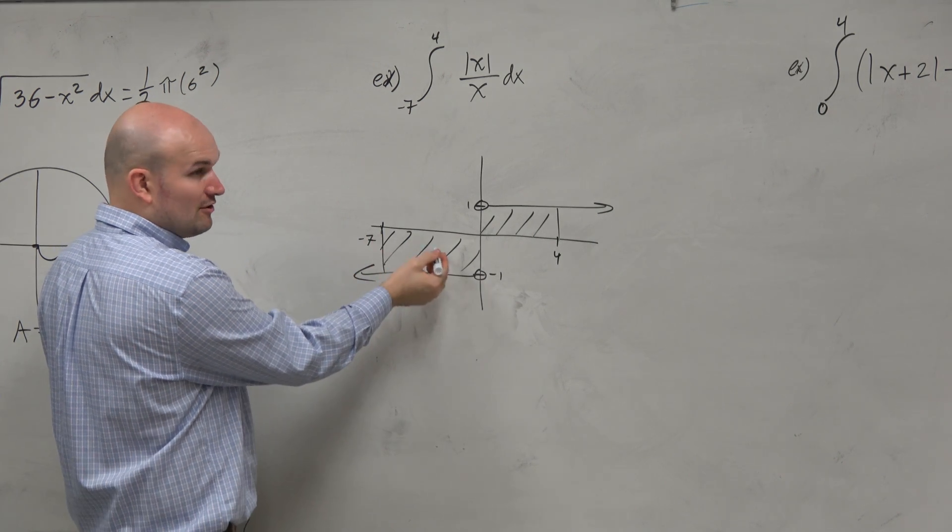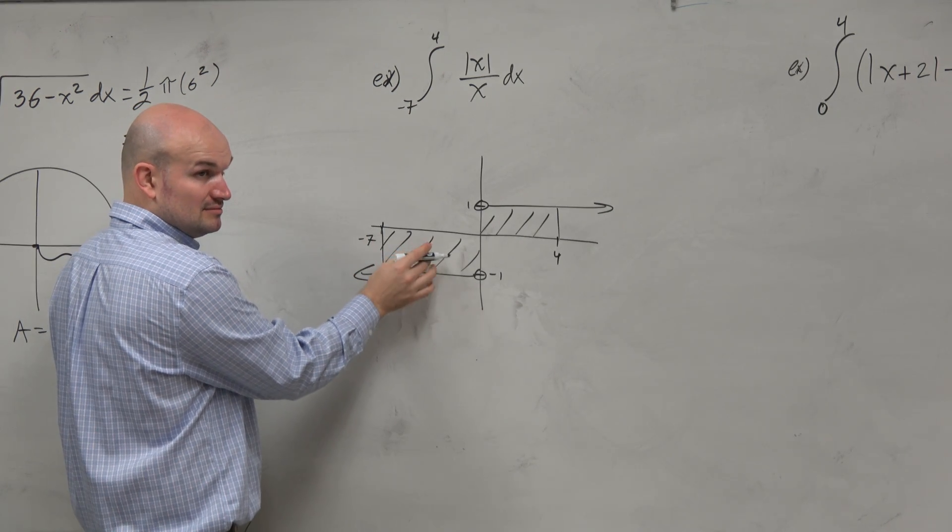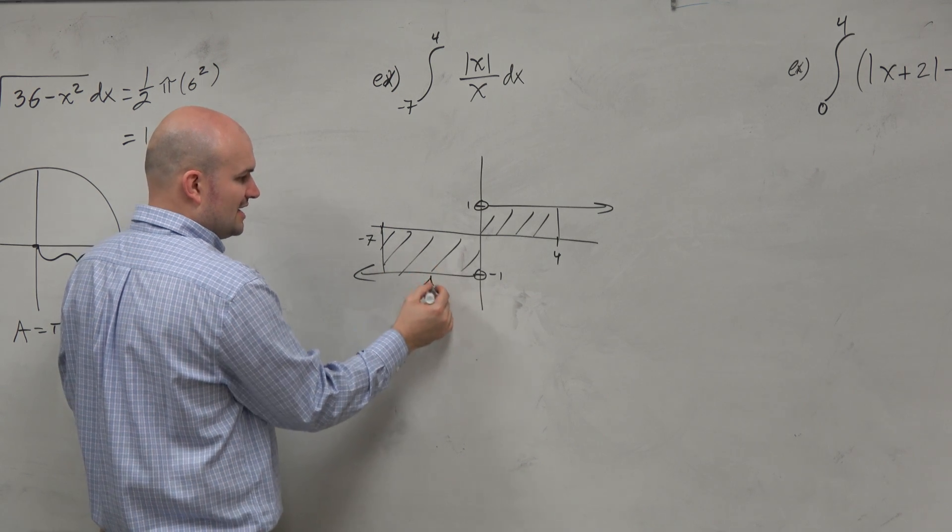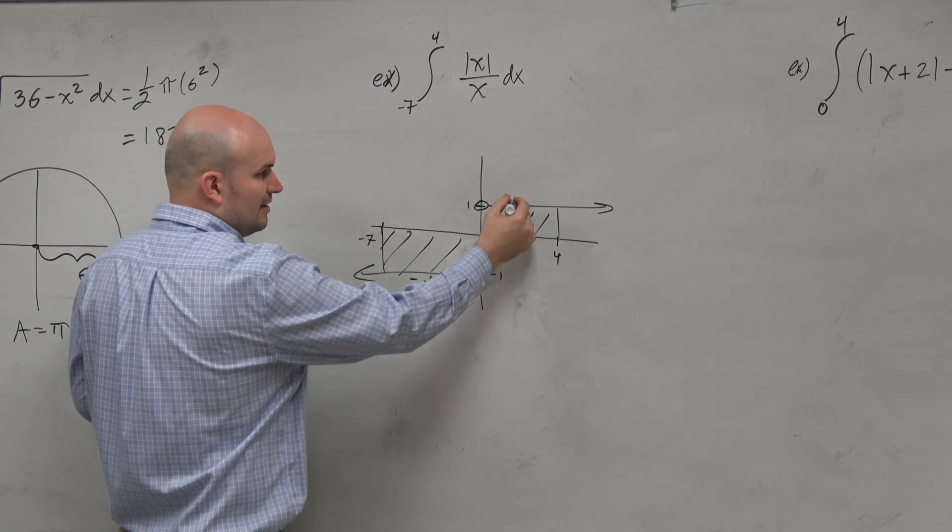So here, now again, remember this is negative, though, right? So we've got to be careful. So we basically, let's just call this like a1. Well, that's negative. And this would be a2.